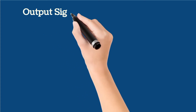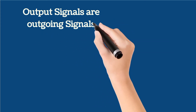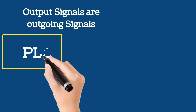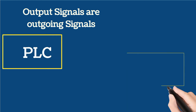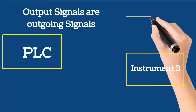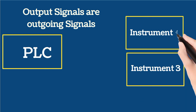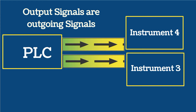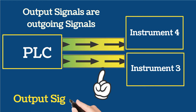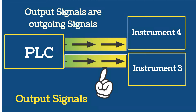Output signals are outgoing signals. Output signals come from the PLC and are provided to various instruments like Instrument 3, Instrument 4, and so on. This is clear from the image as well — output signals are shown by the arrows.